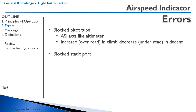Another potential error is a blocked static port. With a blocked static port, the airspeed indicator will decrease in a climb and increase in a descent. The reason for this is because the airspeed indicator cannot compensate for the change in the outside air pressure.